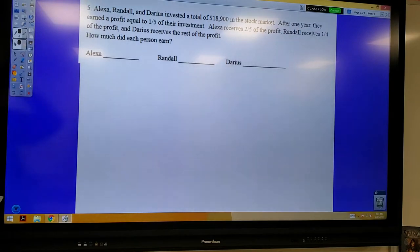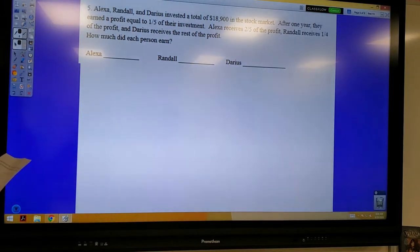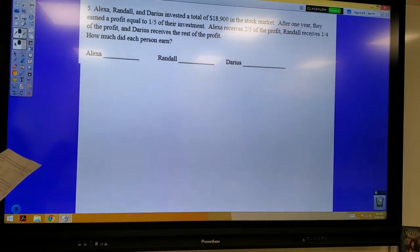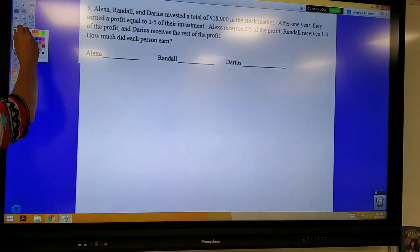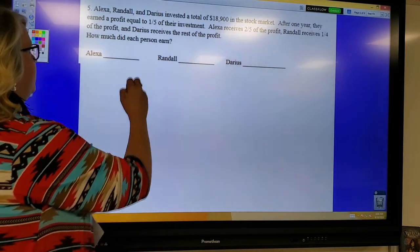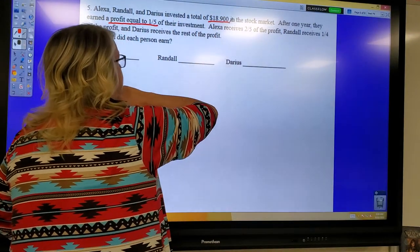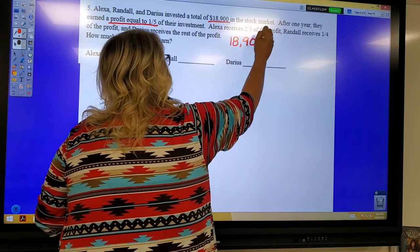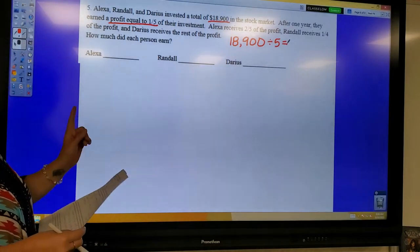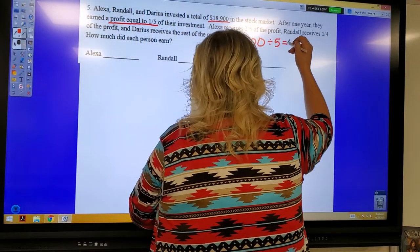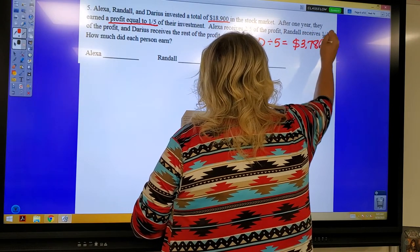Okay, moving on to question number 5. We did two examples of this on the Word Problem Worksheet last week. It says, Alexa, Randall, and Darius invested a total of $18,900 in the stock market. After one year, they earned a profit equal to one-fifth of their investment. Alexa receives two-fifths of the profit. Randall receives one-fourth of the profit. And Darius receives the rest of the profit. How much did each person get? So before we figure out how we can start figuring out how much each person gets, we have to figure out what was the profit. So the profit was one-fifth. The profit is one-fifth of the initial investment. So if the initial investment was $18,900, and we want to find one-fifth of it, I am going to divide this into five pieces. That will tell me what one-fifth is. So one-fifth of this number is $3,780. And this is the profit. So I'm going to label that so all of my work stays very organized.